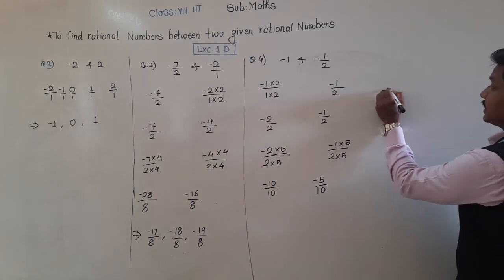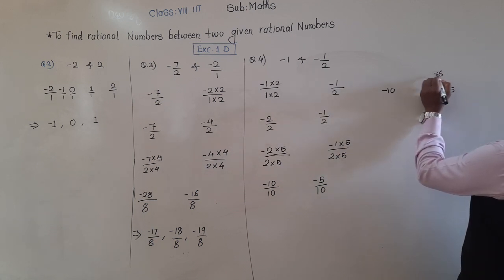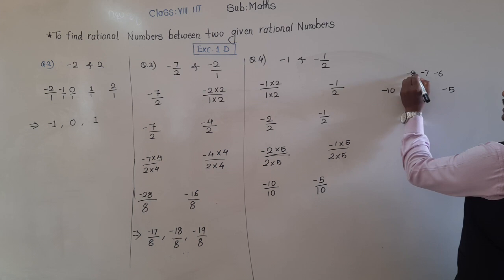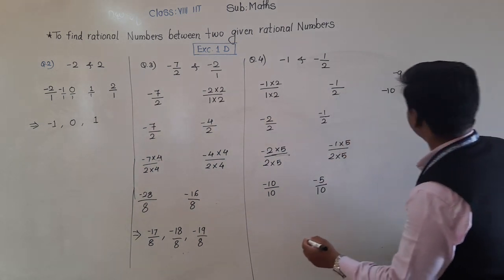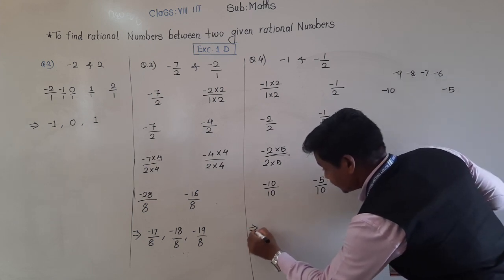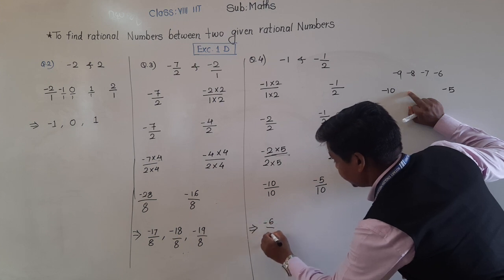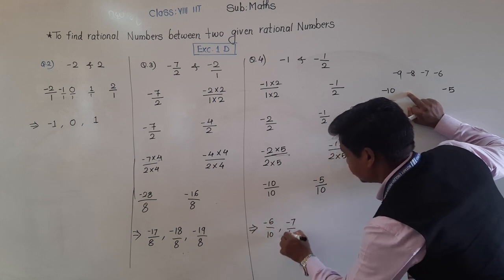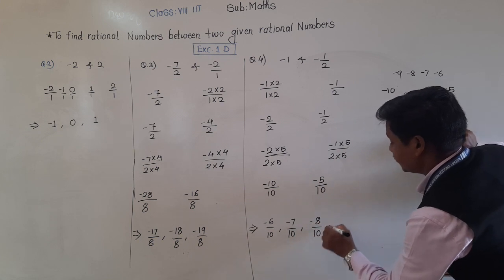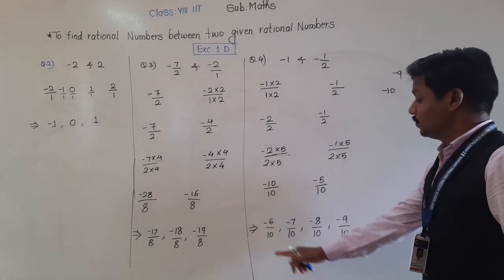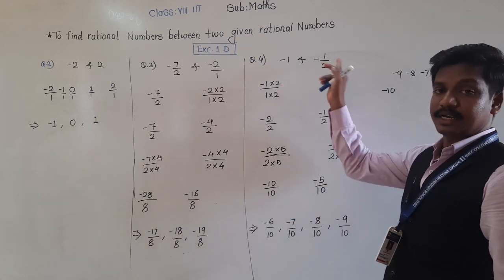Now between −10 and −5, the integers are −6, −7, −8, and −9 — exactly four numbers. So the four rational numbers between −1 and −1/2 are: −6/10, −7/10, −8/10, and −9/10.